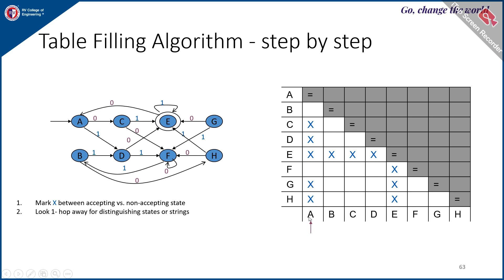Likewise, take pairs A,H; A,G; A,F; A,E; down to A,B. For A and F: A on 0 goes to C, F on 0 goes to F — both non-final. A on 1 goes to D, F on 1 goes to B — both going to non-final states on both 0 and 1. So no cross is placed; they may be equivalent. That is the meaning of leaving it blank. Similarly for A and B, it cannot be distinguished by one alphabet, so leave it blank.